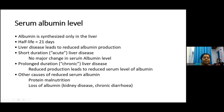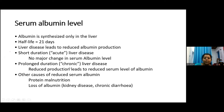Serum albumin indicates the chronicity of liver disease. Albumin is synthesized only in the liver and has a half-life of 21 days. Liver disease leads to reduced albumin production. In short-duration disease such as acute hepatitis, albumin levels might be normal or only slightly reduced. In chronic liver disease with prolonged duration, reduced production leads to lower serum albumin levels, as in cirrhosis.